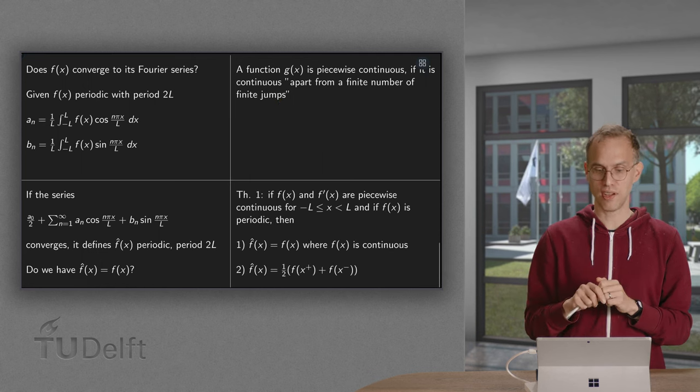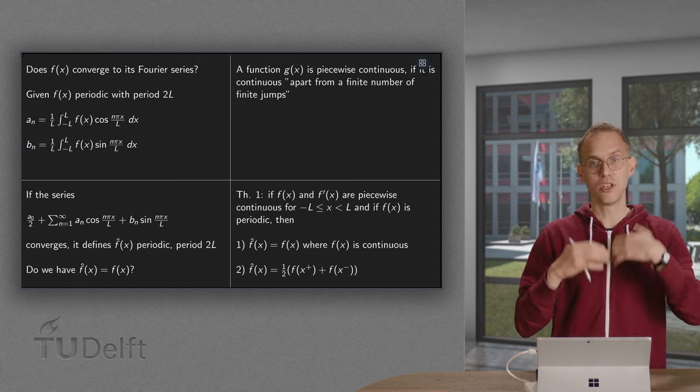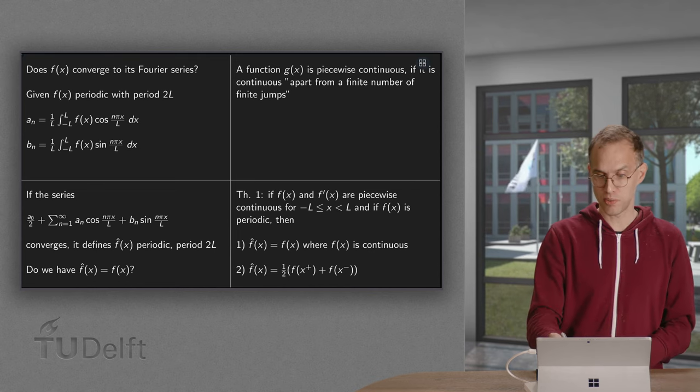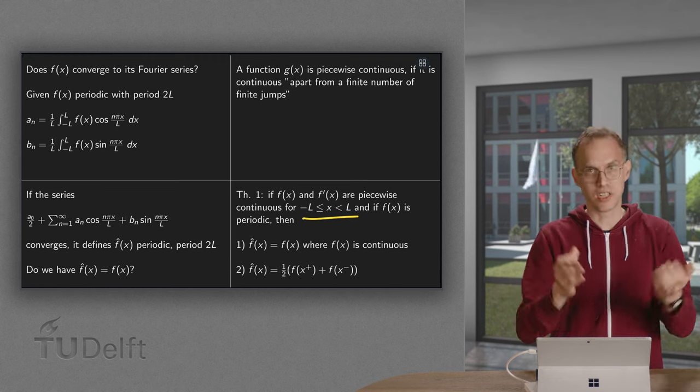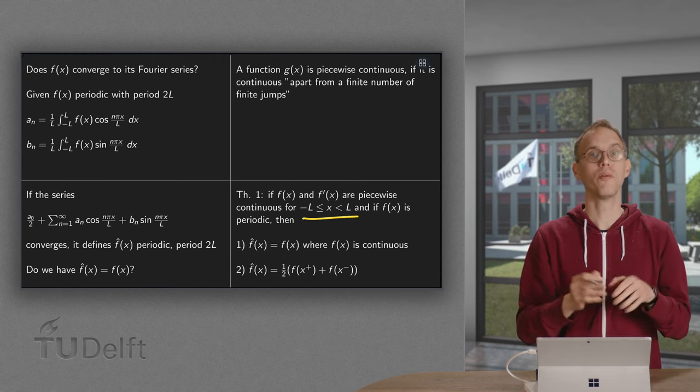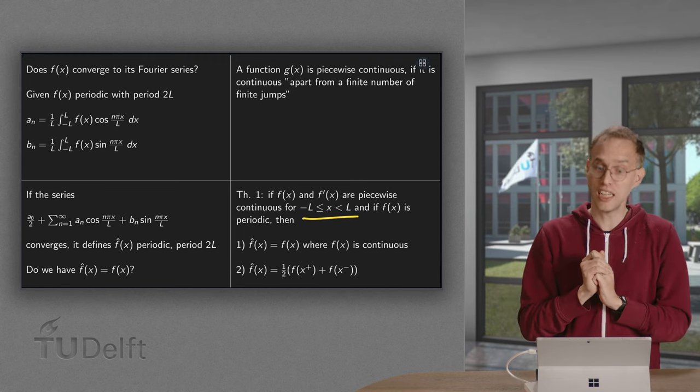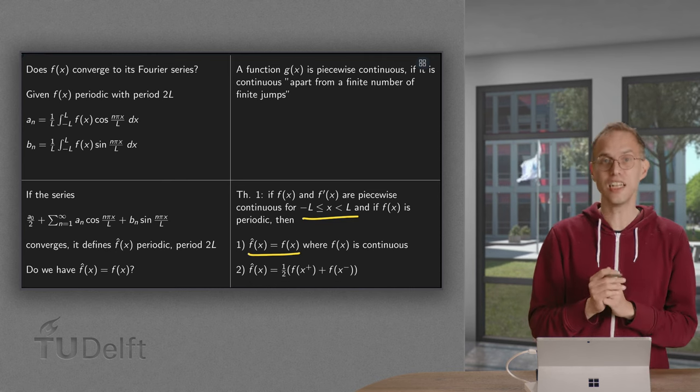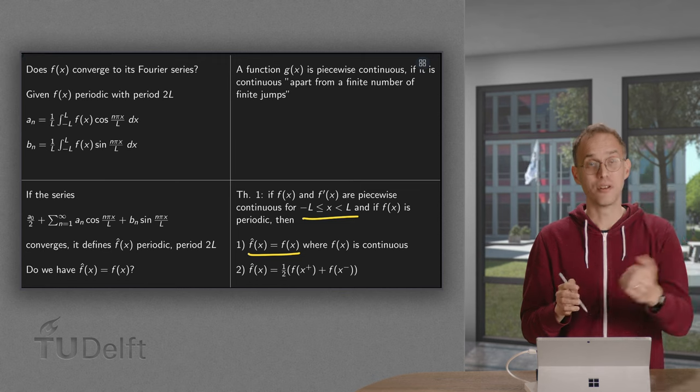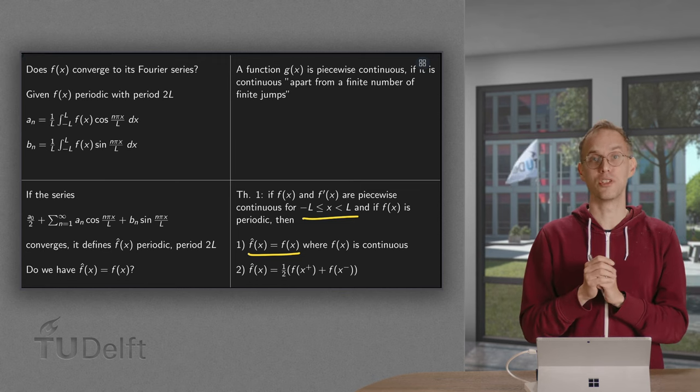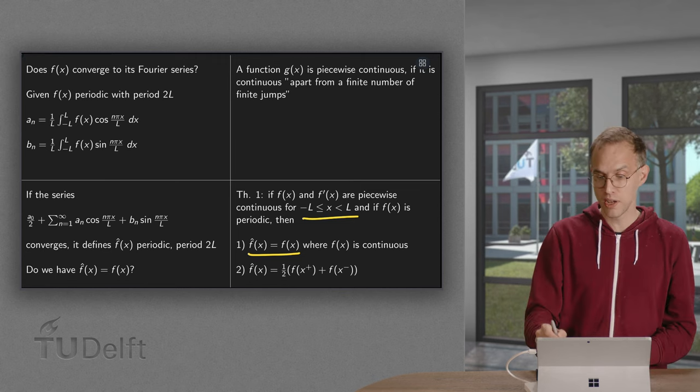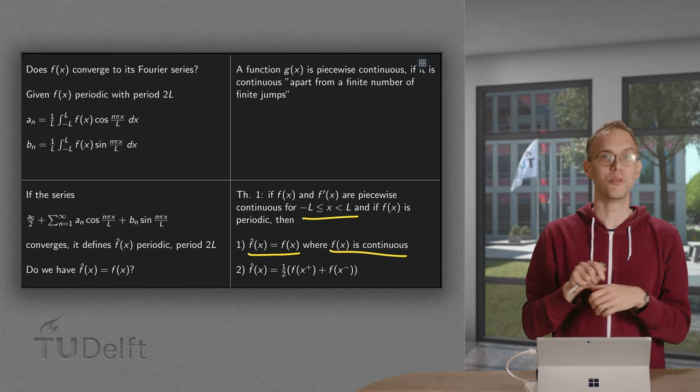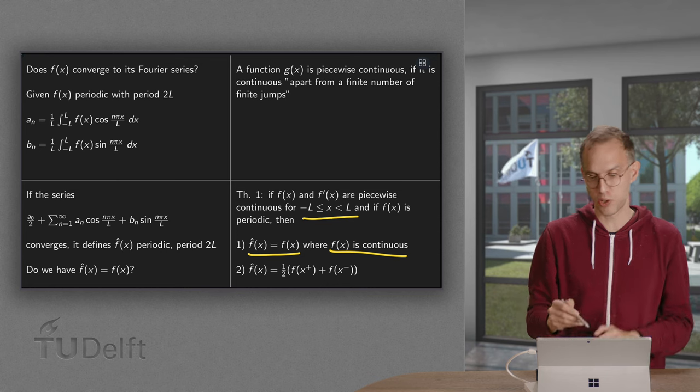In that case, we have a really nice theorem. If both f and f' are piecewise continuous for x between -L and L, and if this f is periodic with period 2L, all of that is something you can check easily. Then your f̂ is indeed equal to your f. So then your Fourier series indeed converges to your original function at the points where you're continuous. And at the points where you are jumping, what does your f̂ do?